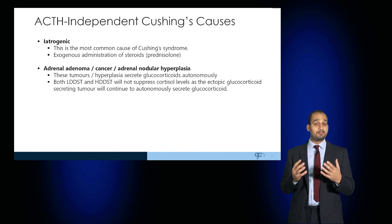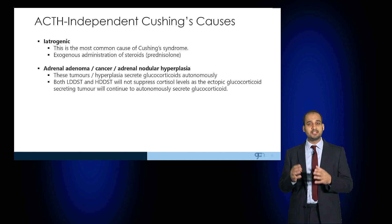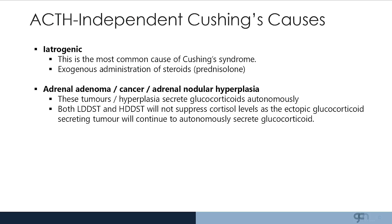Iatrogenic administration of steroids is the commonest cause of ACTH independent Cushing's Syndrome. Adrenal cancers, adenomas, and nodular hyperplasia can also lead to the autonomous secretion of glucocorticoids. In the context of a cancer, both the low dose and high dose dexamethasone suppression tests will not suppress cortisol levels.